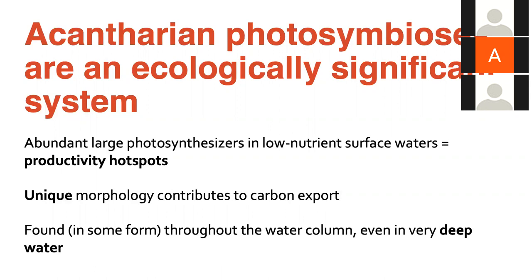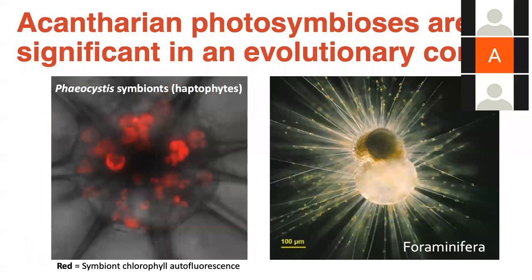Acantharian photosymbioses are also significant in an evolutionary context, especially if we're interested in how organisms acquire chloroplasts. Looking at this acantharian cell, the red indicates chlorophyll autofluorescence from the symbionts, and we can see that all of the symbionts are cloistered very tightly in the center of the cell in the inner cytoplasm. Compared to a foraminifera where symbionts are distributed in different layers of cytoplasm, the symbiosis in acantharians is more fixed.